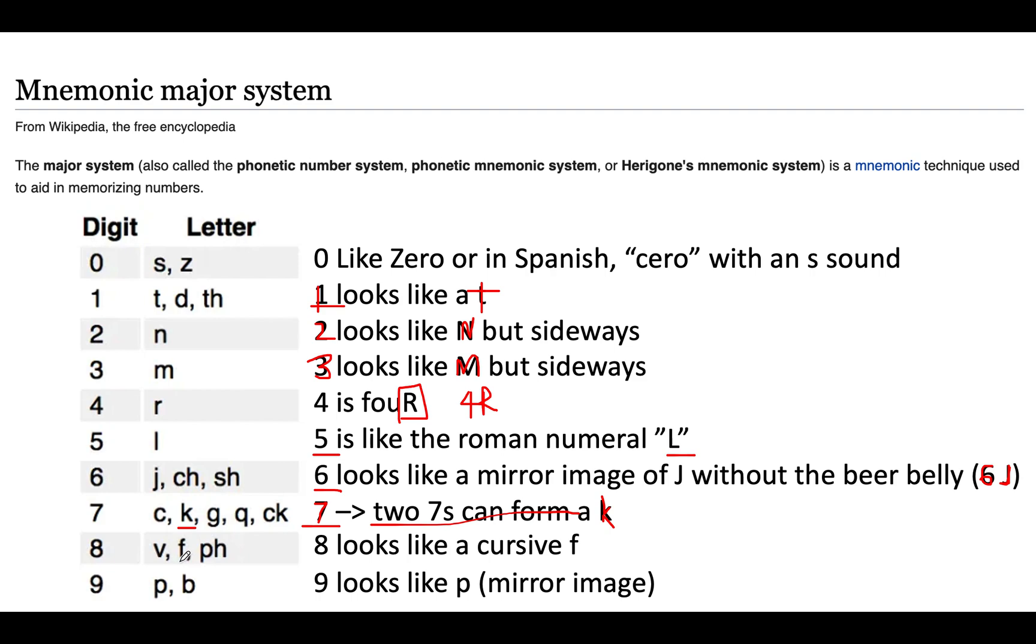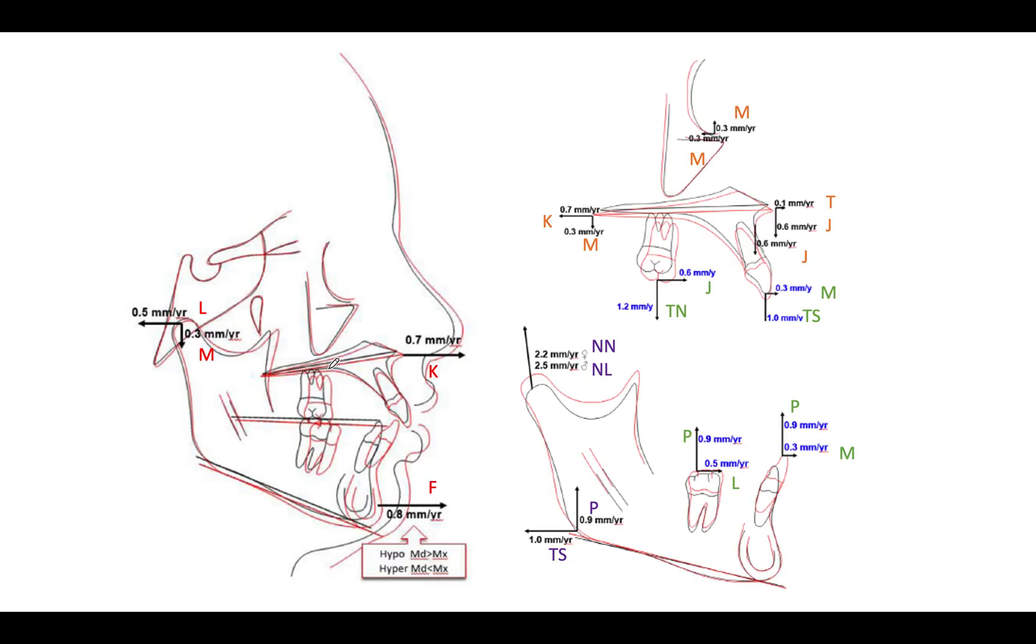Eight looks like an F actually in cursive. So F in cursive looks like this, right? So it kind of looks like an eight there. That's why eight is an F. Nine looks like a P but it's like a mirror image, right? So that's a nine. This is a P. All right, so mirror images. That's why it's a P. I'm just going to use P in this illustration. All right, so I've turned all the numbers into letters and now we can try to make words out of them.